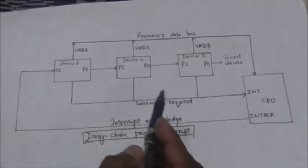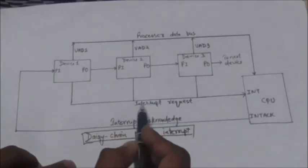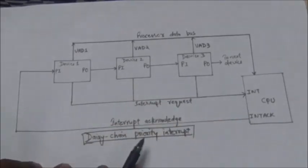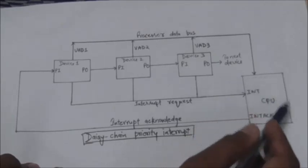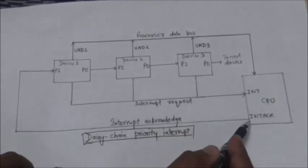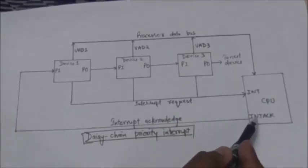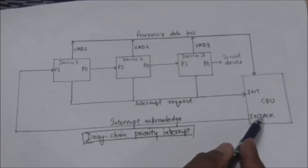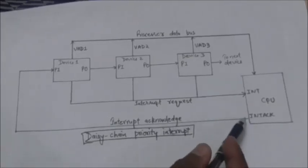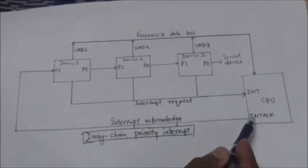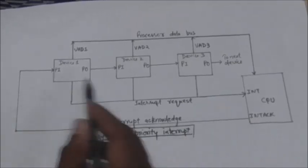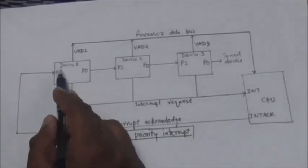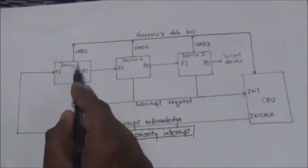There is a common interrupt request line among all devices, so this interrupt request line is common to all devices. Whenever the CPU receives interrupt requests, it responds by enabling its interrupt acknowledge line. When this interrupt acknowledge line is enabled, it means the CPU has sent an interrupt acknowledgement signal, which is first received by the first device.